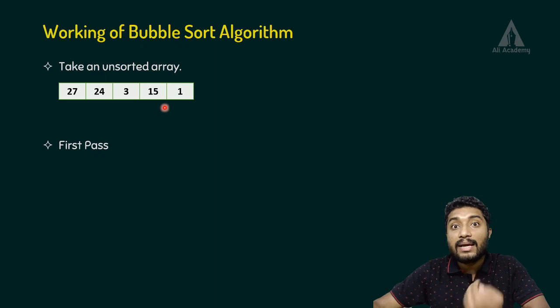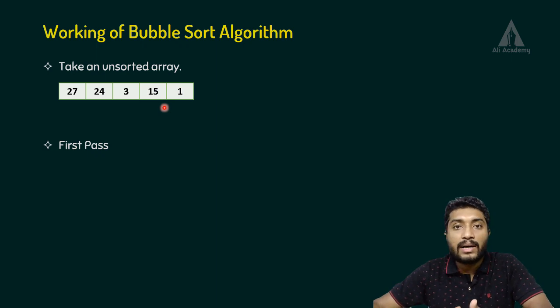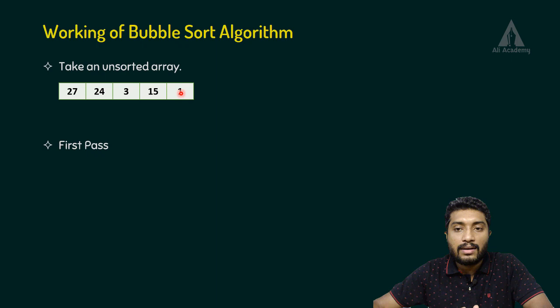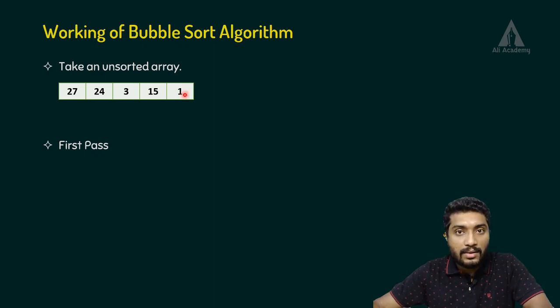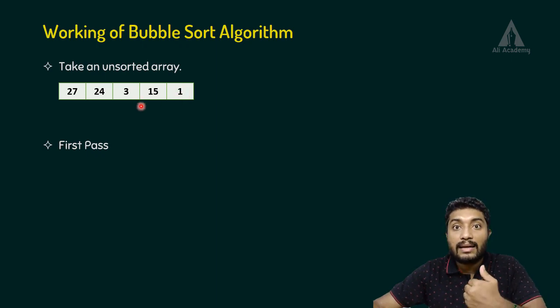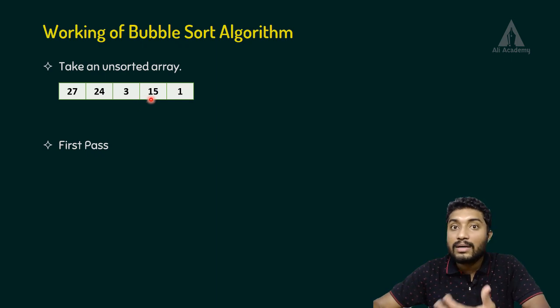We have n minus 1 number of passes. We have five elements, so n minus 1 gives us 4 number of passes.